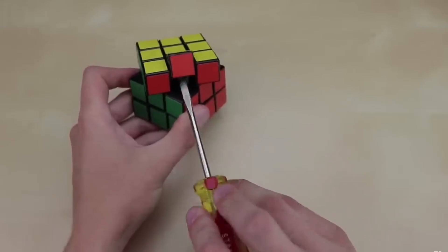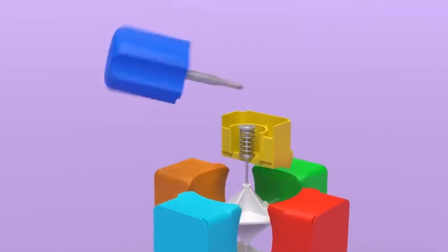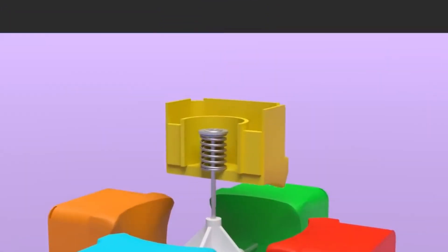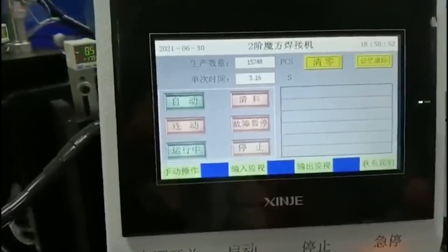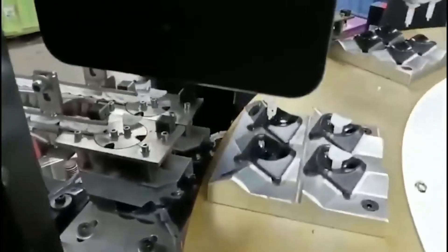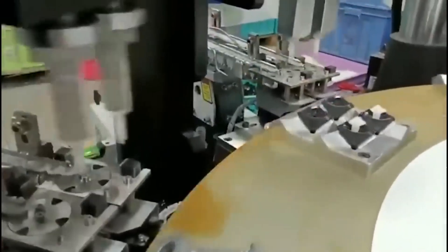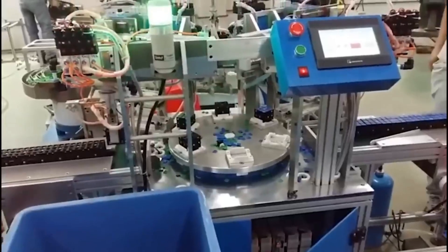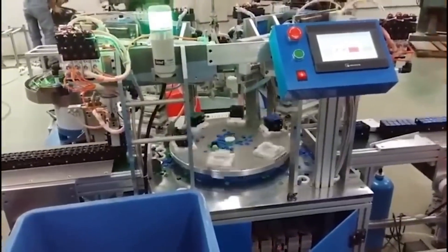Importantly, assembly is done in an automated manner, leveraging cutting-edge technology to ensure maximum precision and efficiency at every stage of the process. Specialized machines work in harmony to ensure that each part is positioned with the correct orientation and fits with the firmness necessary to withstand the rigors of continuous use.